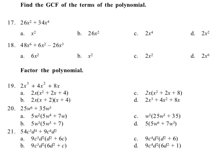We're finding the greatest common factor for the first two — we don't have to show what's left. Looking at the coefficients 26 and 34: 26 is 2 times 13 and 34 is 2 times 17, so we can divide out a 2. For the x's, the first term only has x squared, so we're limited to the lower exponent. We can get x squared out, making the greatest common factor 2x squared — that's answer D.